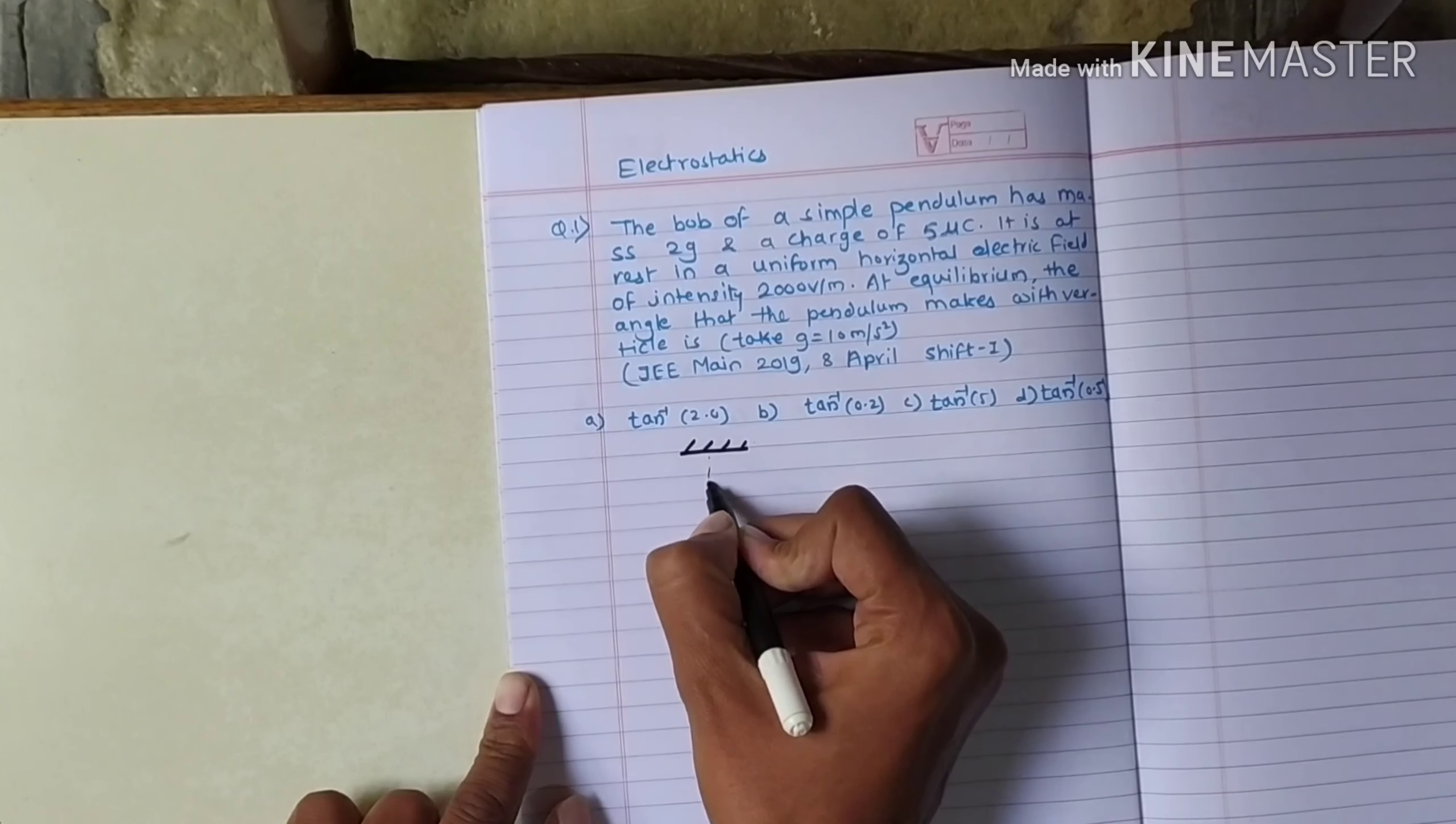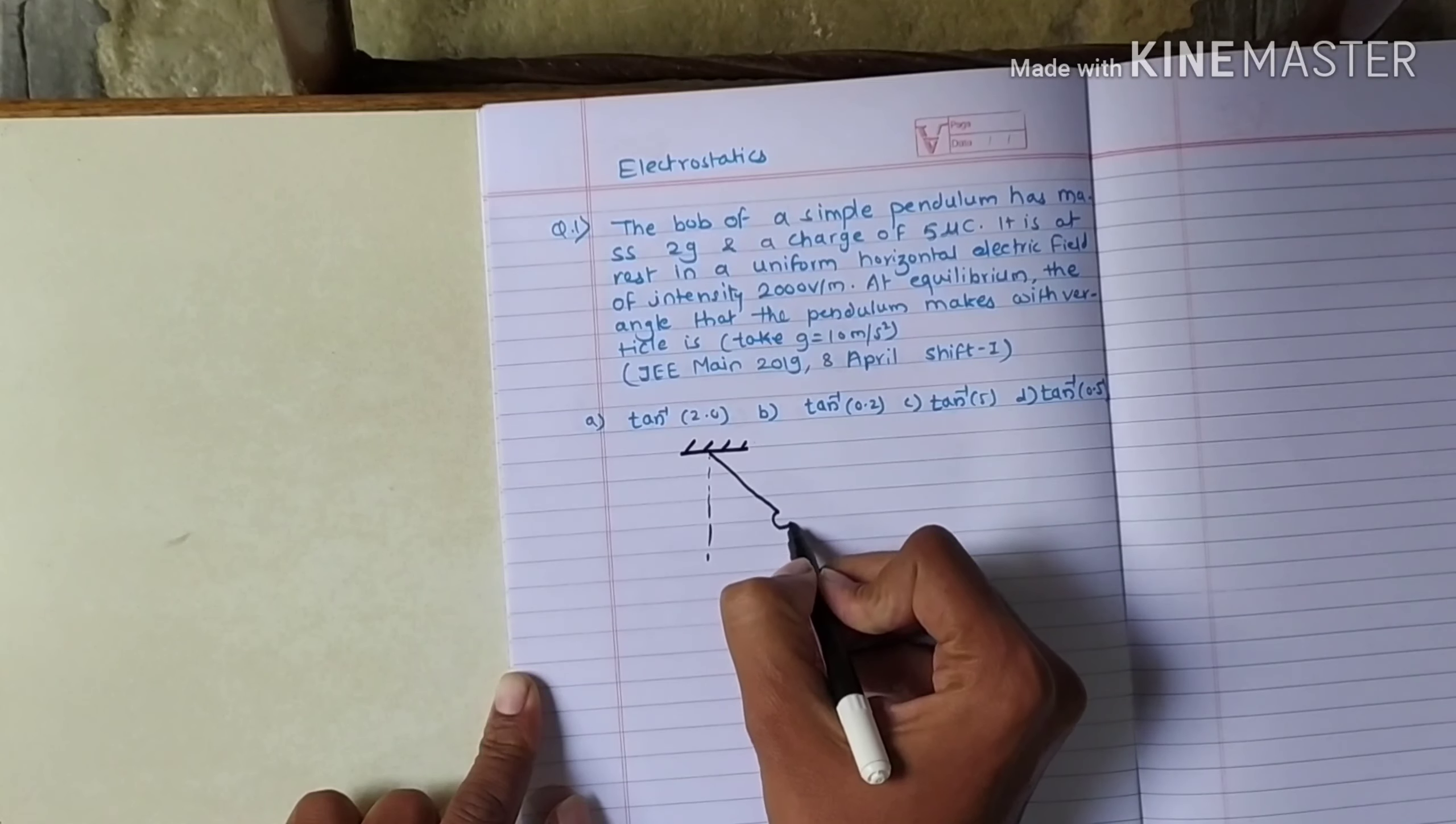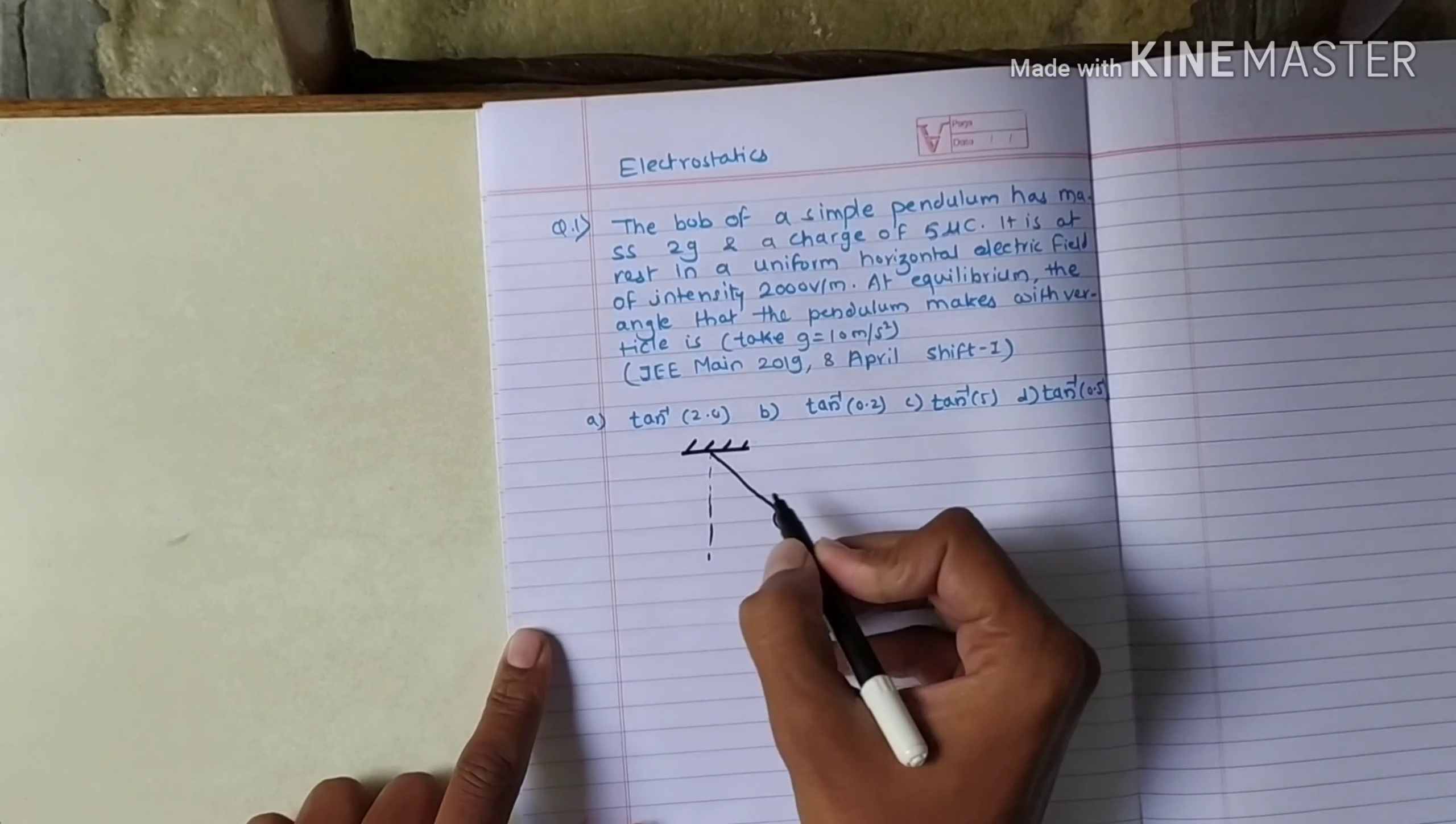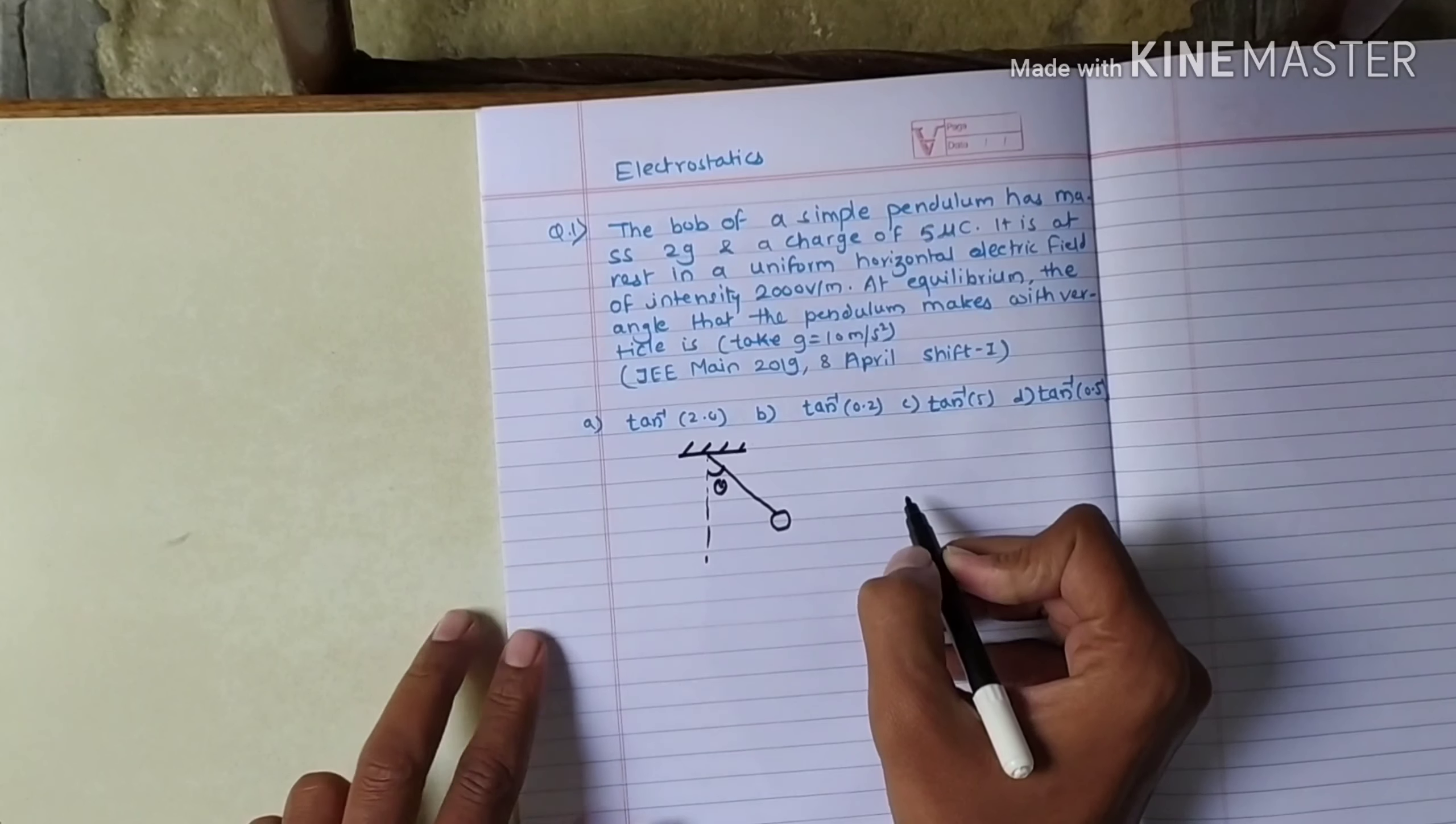Let us draw the diagram first. If suppose this is the vertical, this is a pendulum bob. This is how it will be. It is making a certain angle theta which we have to find out.